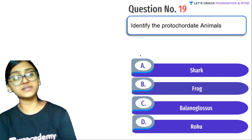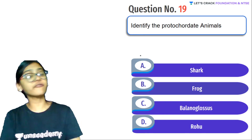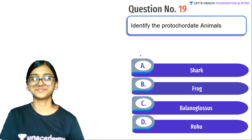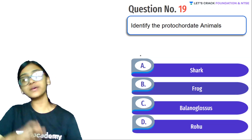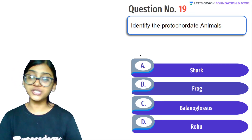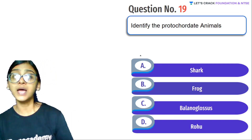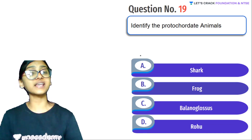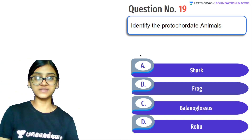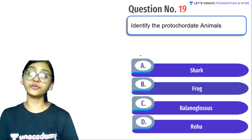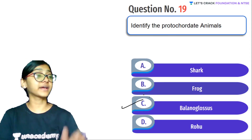Next question: Identify the protochordate animal. Options: shark, frog, Balanoglossus, Rohu. According to NCERT class 9, Balanoglossus is the answer. Shark and Rohu are chordates — shark is Chondrichthyes (cartilage fish), Rohu is a bony fish, and frog is an amphibian. Balanoglossus belongs to Hemichordates. In class 9 NCERT, hemichordates are placed under Protochordata, so the answer is C — Balanoglossus.